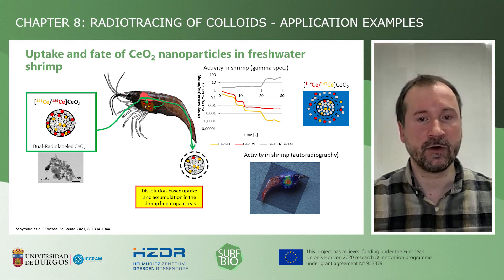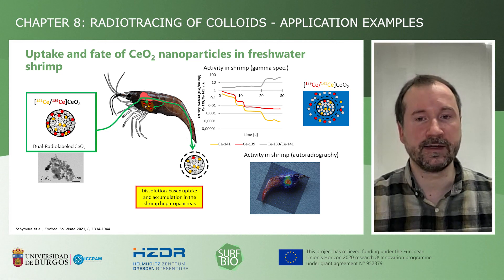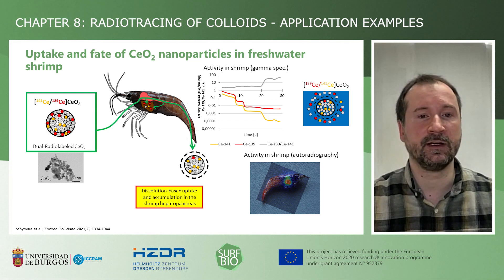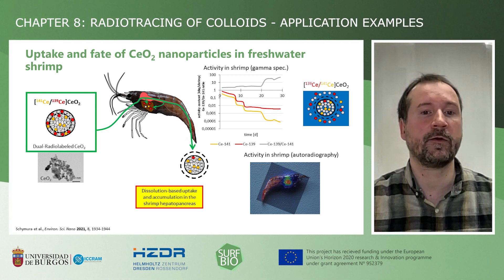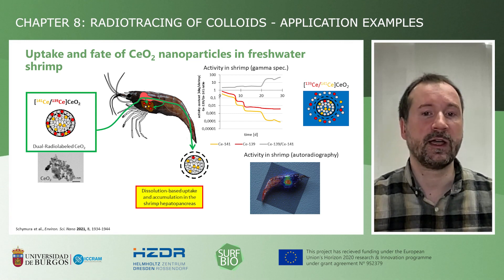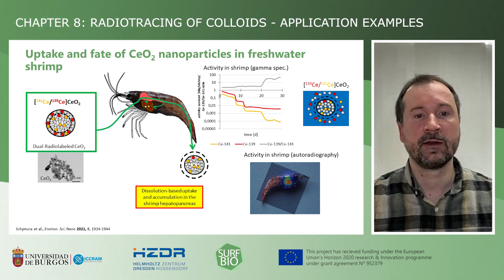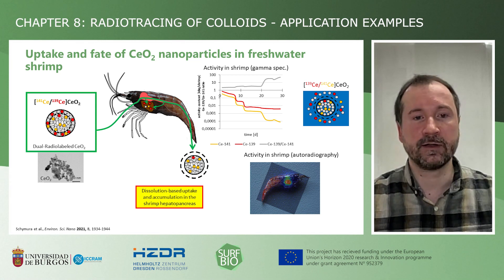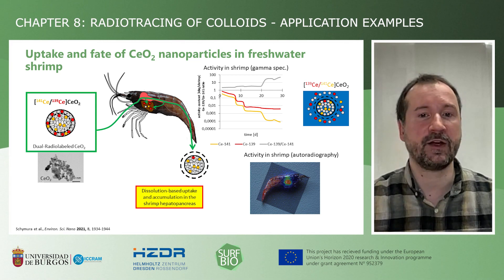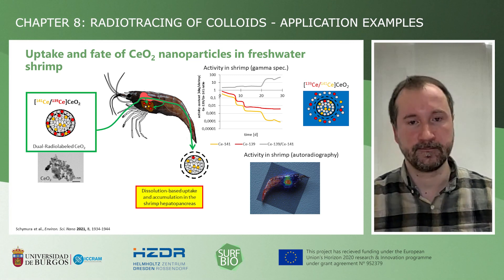Using autoradiography, we can localize the remaining activity in the lower cephalothorax of the shrimp, where the hepatopancreas of the shrimp is located — the organ responsible for the detoxification of the shrimp's blood.